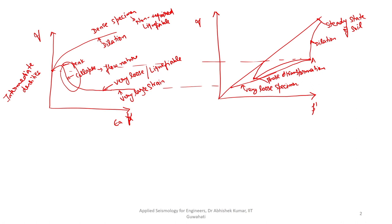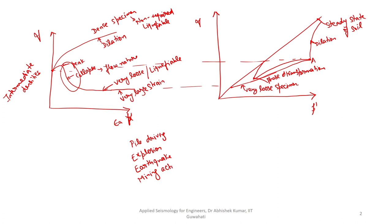Now, this is related to how the initiation of liquefaction happens at a particular site — based on what is the value of effective stress and how much confinement is available to the sample, one can get an idea about the initial state of the soil. In addition to this state, there will be additional loads coming onto the sample, which can be due to pile driving, explosion, other manmade activities, earthquake, or mining activities — all of which are sources of vibrations or additional loading.